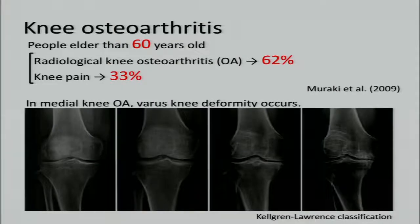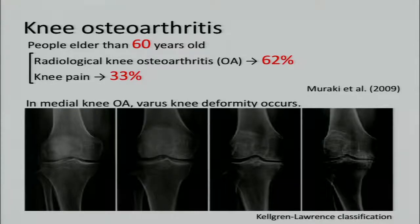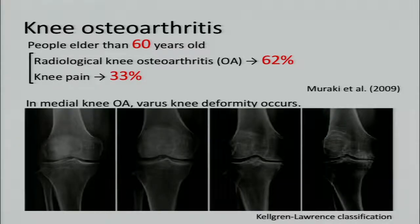The prevalence of radiographic knee OA in people older than 60 years old is reported to be 62% in Japan, and the prevalence of knee pain is reported to be 33%. The majority of patients present with medial knee OA, and in these patients, various knee deformity occurs due to the narrowing of the medial joint space.